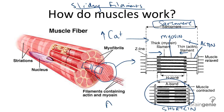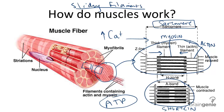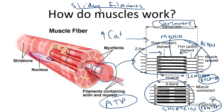This causes the muscle to shorten or contract. ATP is necessary for this contraction. When the muscle relaxes again, the filaments slide back to their original positions. So when you say muscles shorten, they contract. And when they go back to their original positions, they are relaxed. And this is the sliding filament theory.